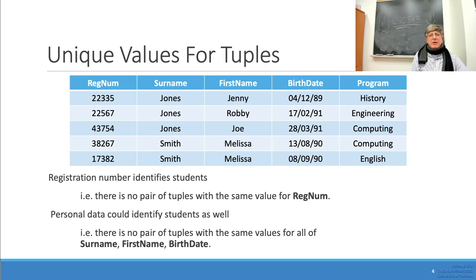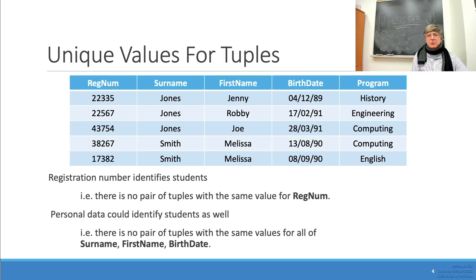Now let's look at an example of unique values for tuples. The relation shown on the slide has a schema composed of: registration number (an integer), last name or surname (a string), first name (a string), birth date (a date), and the program where the student is enrolled.